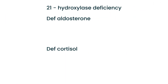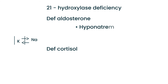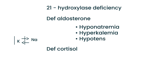If you have deficient aldosterone, several problems occur. Aldosterone normally brings sodium back into your bloodstream and kicks out potassium into the urine. Without aldosterone, you will not bring back sodium, resulting in hyponatremia — low sodium in the blood. You will not excrete potassium, resulting in hyperkalemia — high potassium in the blood. And because sodium brings back water, your blood pressure will be low, so you will be in a state of hypotension.